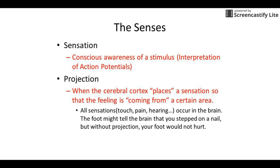The next concept is sensation — a conscious awareness of a stimulus, or the brain's interpretation of the action potentials. It all happens in the brain. All touch, pain, temperature, and pressure happen in the brain. When you stub your toe, your toe doesn't actually feel the pain — it just sends action potentials to the brain, and your brain has to interpret that as an 'ouch' and recognize it's coming from the toe.